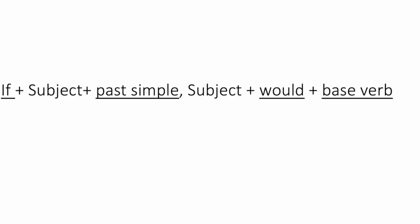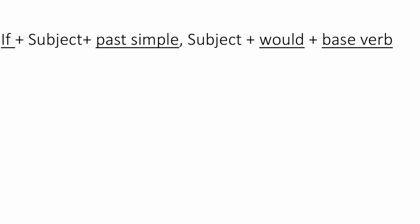So how do we make it? We use 'if' plus subject plus past simple — that is our if-clause. And for the main clause: subject plus 'would' — 'would' is fixed — plus the base form or simple form of the verb.